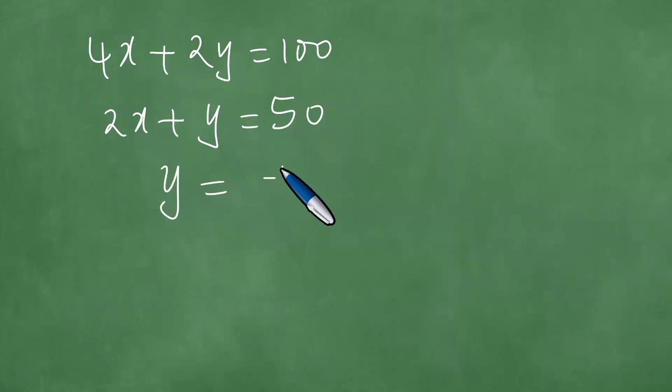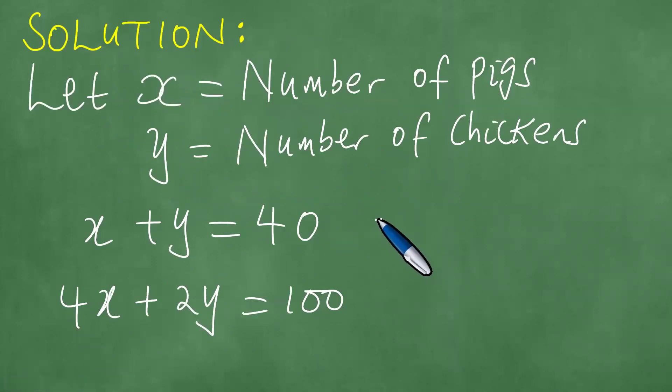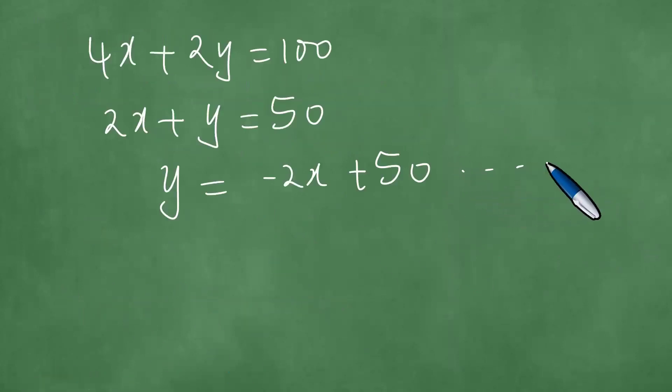And Y then equals minus 2X plus 50. Therefore, this one here is the first equation, and this one here is the second equation.